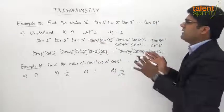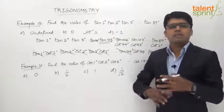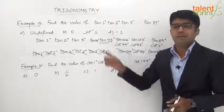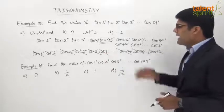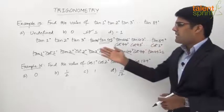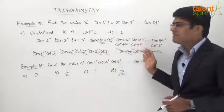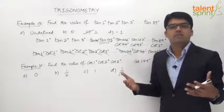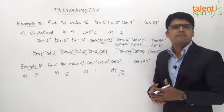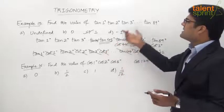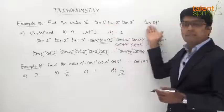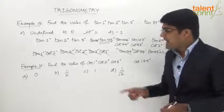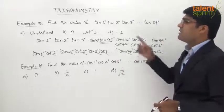Simply represent the terms so that most cancel out, and for the remaining term find the value to get the required answer. You can cut down the number of steps — with practice you can visualize which terms cancel without putting pen to paper, and directly conclude that the only term left is tan 45°, giving answer option C: 1. Let us now look at Example 16, which is similar to the previous one.